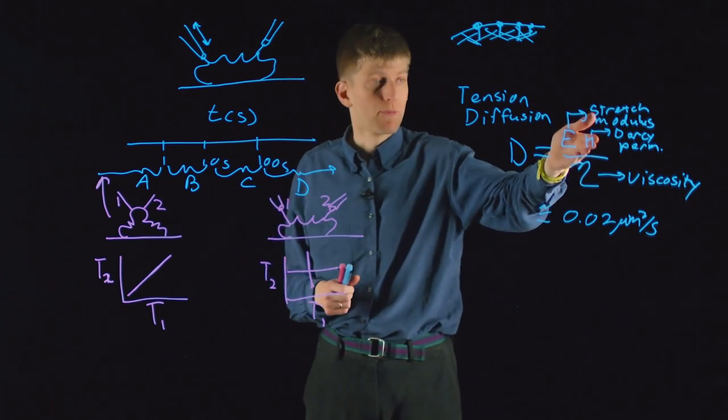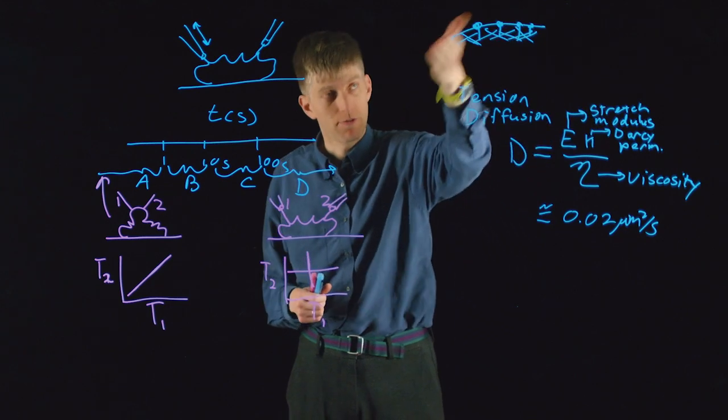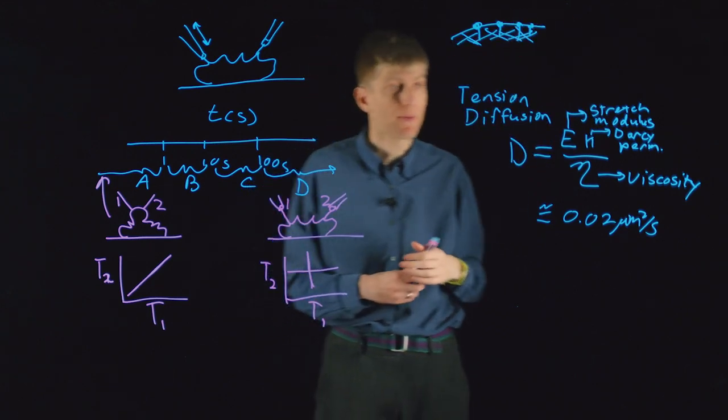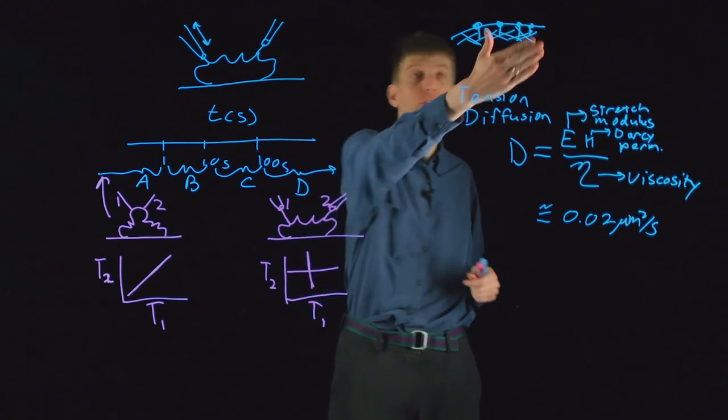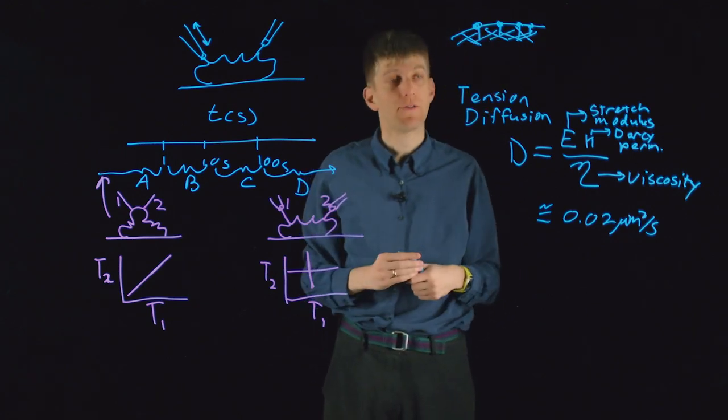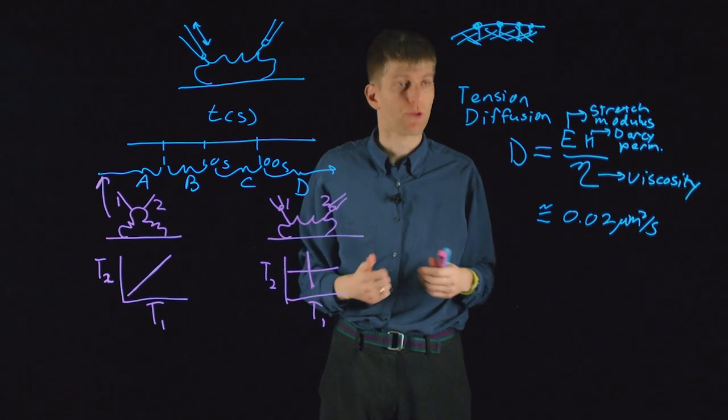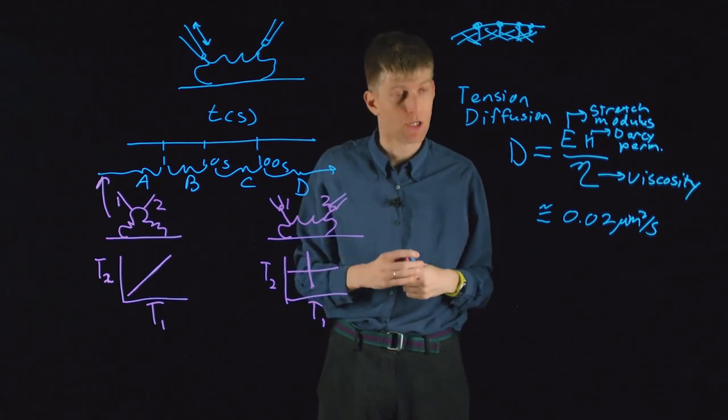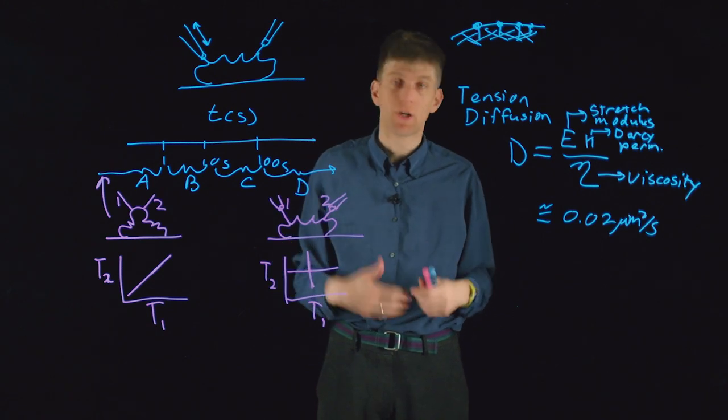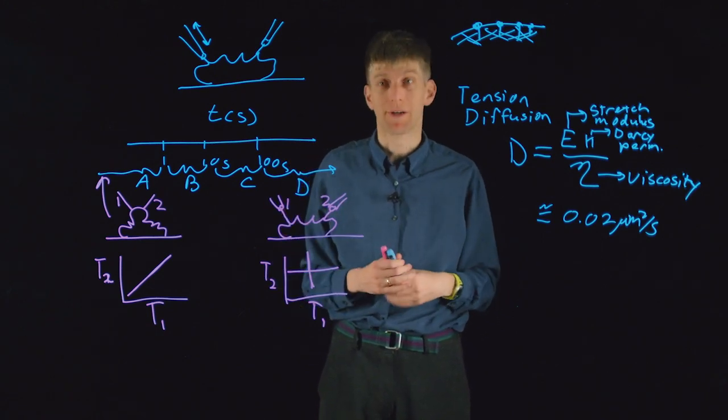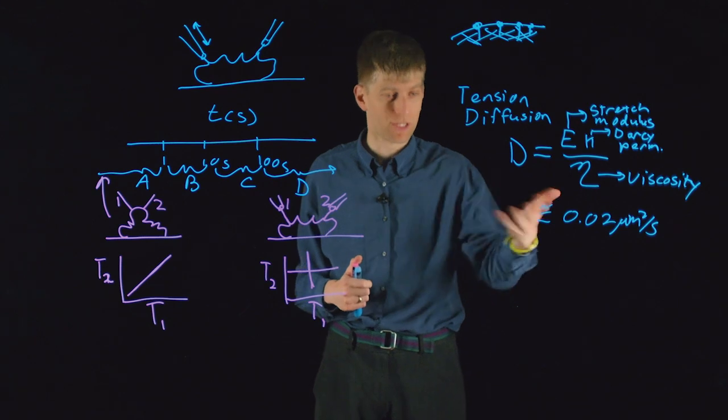The fact that the Darcy permeability is so sensitive to the density of transmembrane obstacles also suggests that cells might dynamically regulate the density of these obstacles and control the propagation of tension through the cell. These speculations illustrate that there's still a lot to learn about the coupling of membrane mechanics to cell physiology.